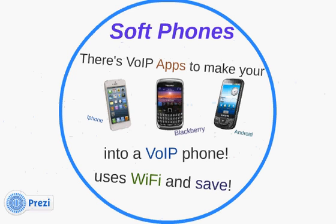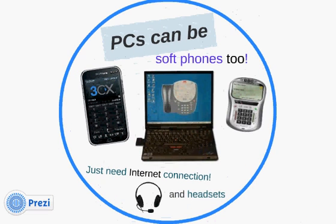You can also get soft phones. There are voice over IP apps to make your iPhone, Blackberry, and Android into a VoIP phone. As soon as you go into a Wi-Fi area, the phone converts from a cell phone into a Wi-Fi phone, and you're not paying any cell phone charges — you get free connections as long as you have a VoIP PBX, a private branch exchange, that you're talking to.